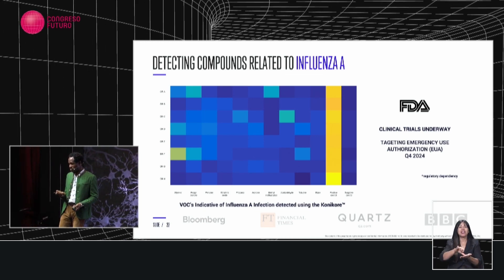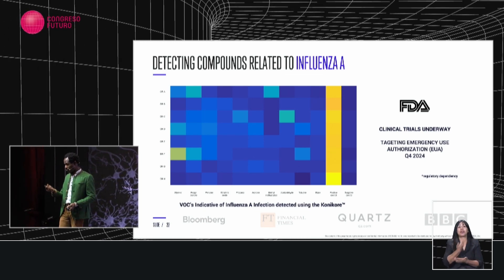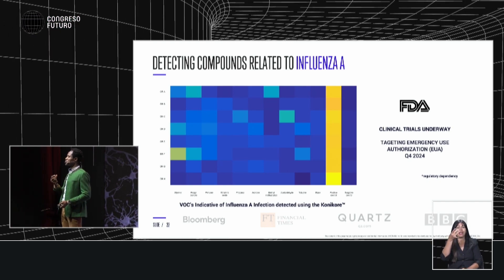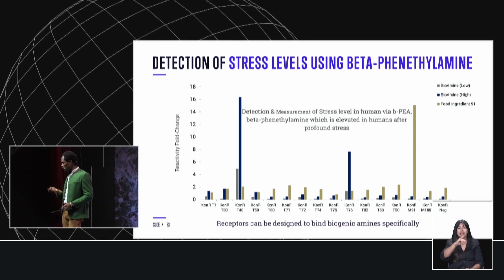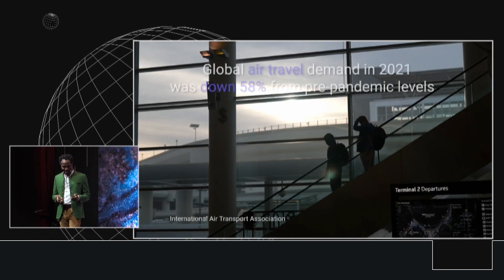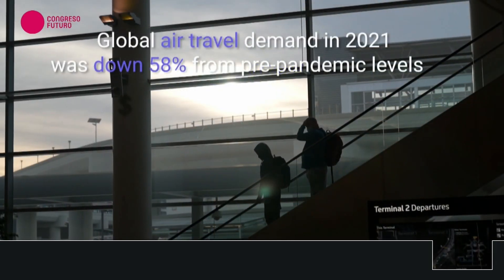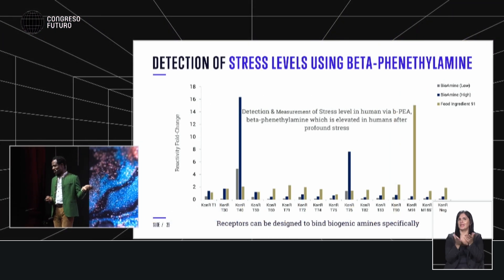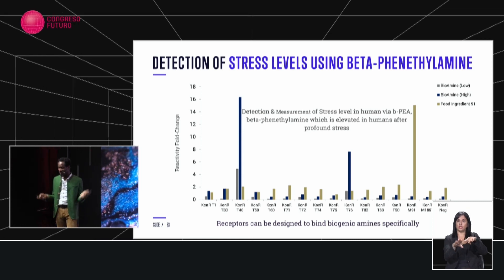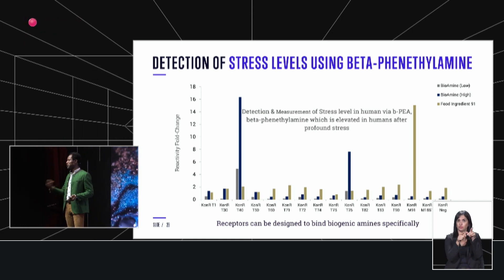We have demonstrated that we can detect the VOCs that are related to influenza A. We have also demonstrated that we can detect stress levels from urine samples. Before I show this video, it's cool to do all of this in the lab and show all of this is working. Let's deploy in the industry. Let's deploy in a real airport and see what that looks like. I'm going to play this video. This is a deployment of our technology at a major airport in the United States of America, the first airport we deployed to, and over this year we'll be deploying to more.